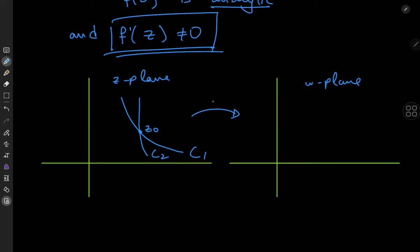Now these curves transform under w equal to f of z into two new curves, let's call them c1 prime and c2 prime. And these two intersect at the complex number w-naught equal to f of z-naught.